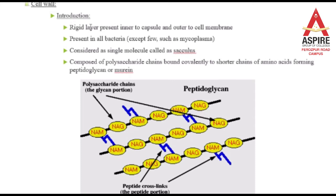The cell wall is a rigid layer present inner to the capsule and outer to the cell membrane. If the bacteria has slimes and capsules, they are on the outside. The cell wall is present between the slime capsule and the cell membrane. This is our cell wall layer, and it is present in almost all bacteria except Mycoplasma.